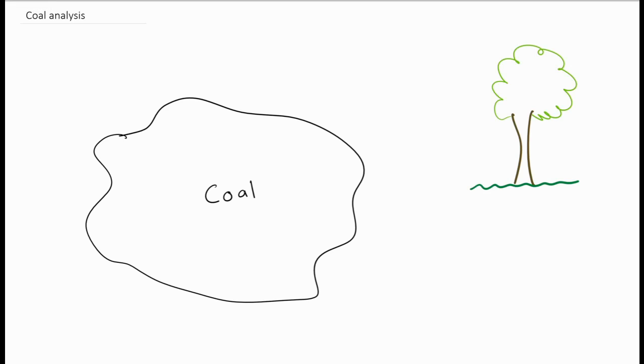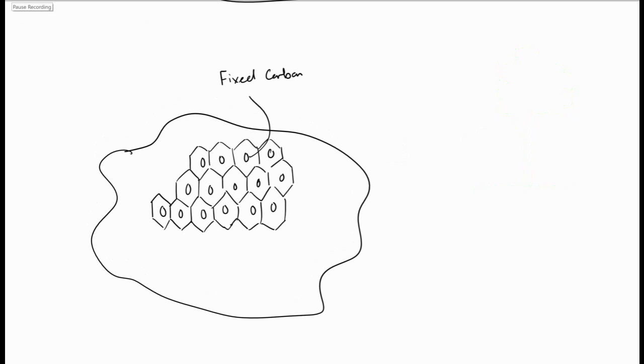So as the tree dies, the organic matter in the tree is compacted and converted into coal. Seeing that coal comes from trees and trees are made out of carbon, the main component of coal is carbon and specifically fixed carbon. During the process in which the carbon is compacted after the tree starts rotting, the coal is converted into graphite-like substrates which are carbon rings linked to each other quite tightly.